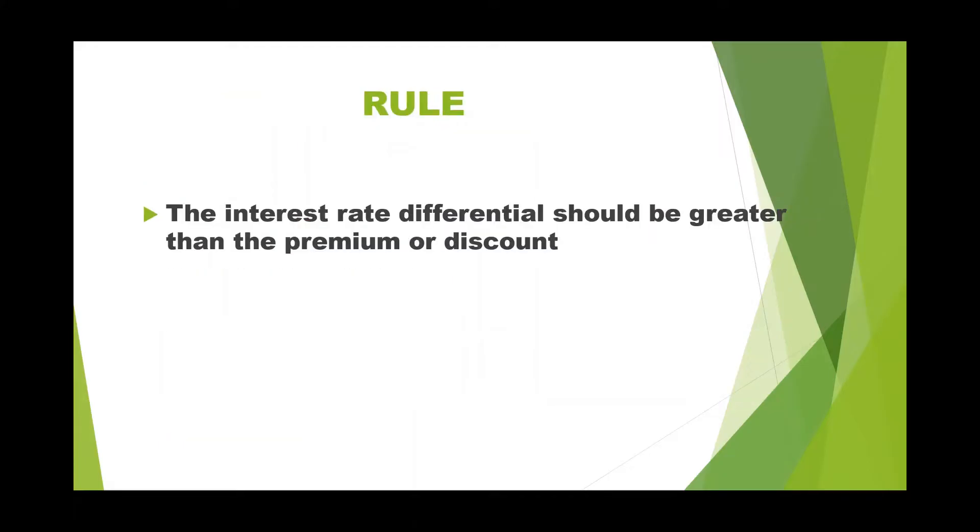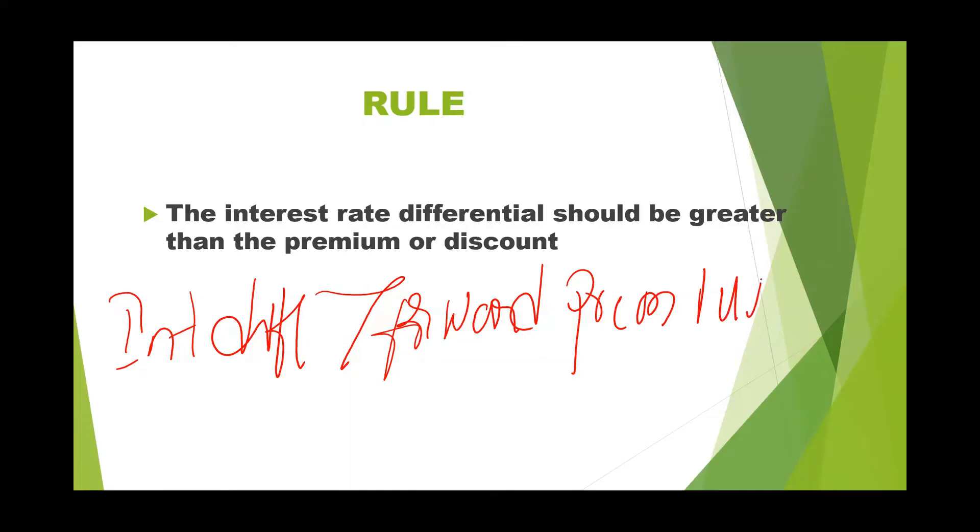There is a discrepancy between the exchange rate and the interest. Arbitrators can make use of this market discrepancy and make profit. The rule for taking advantage is interest differential should be greater than the forward premium or discount. If you satisfy this rule, then you can take advantage out of the market discrepancy.